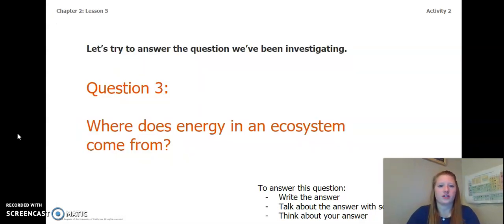Let's try to answer the question we've been investigating: where does energy in an ecosystem come from? So think back to the food web we just looked at, any books we might have read, and our simulations. To answer this question, write the answer in your chapter two, lesson five activity packet in a notebook. You can talk about the answer with someone near you, or you can think about it in your head. Once again, pause the video and answer this question.